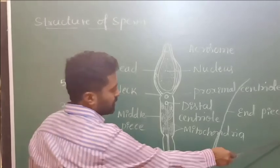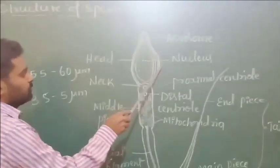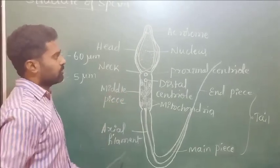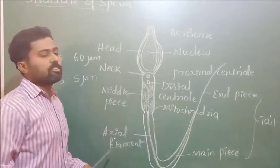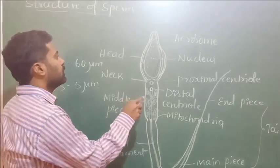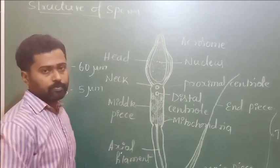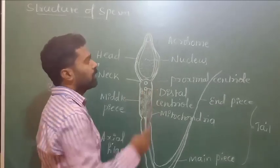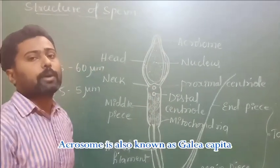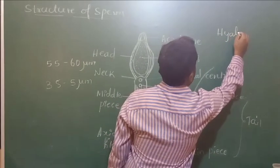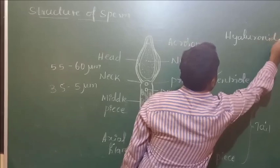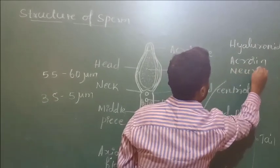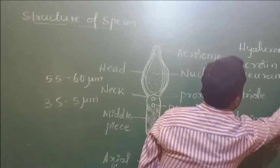The head of the sperm is a pear-shaped structure that mainly encloses the male nucleus, which consists of paternal chromosomes. The head is covered by a structure called the acrosome. The anterior region of the head consists of this acrosome, which is mainly responsible for penetration of the sperm into the egg. It secretes enzymes including hyaluronidase, acrosin, and neuraminidase.